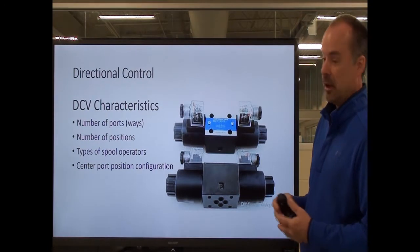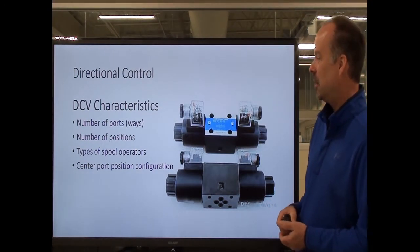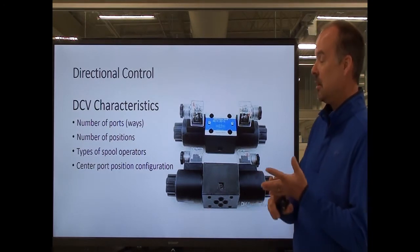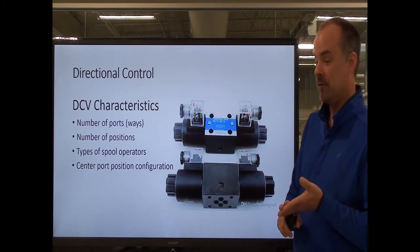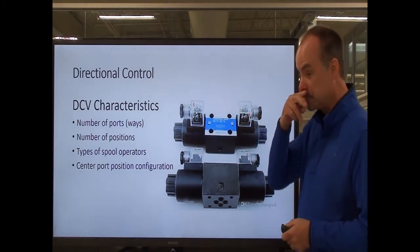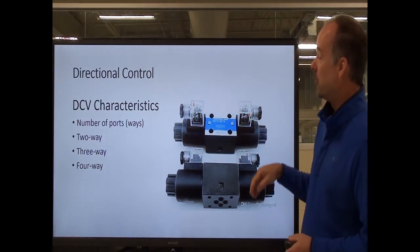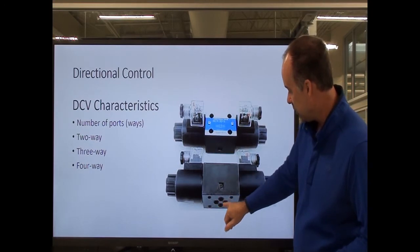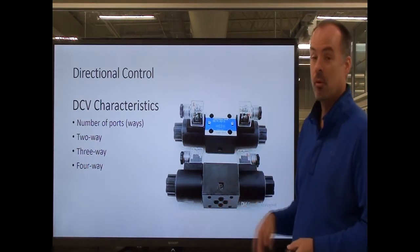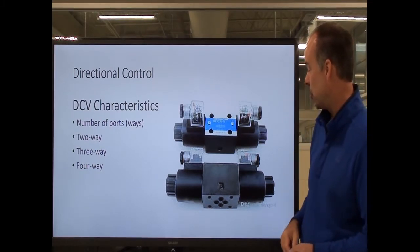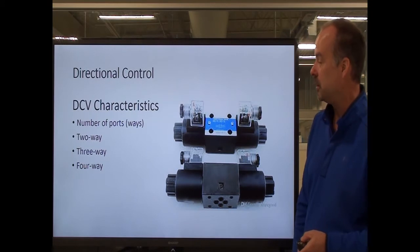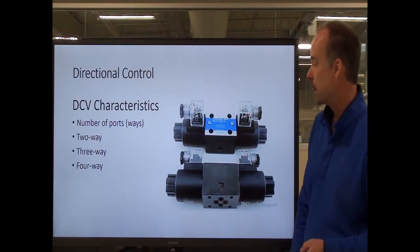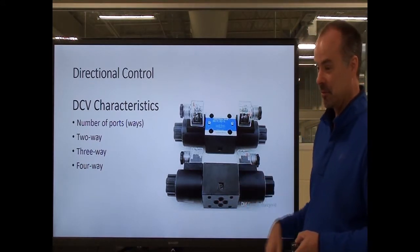Valves are named using a naming convention based on the number of ports or ways, the number of positions, the types of spool operators, and the center port configuration. Looking at the bottom of this valve, I can see four holes, which tells me it's a four-port or four-way valve — meaning there are four places for fluid to flow. Some valves could be two-way with only two ports, or could have three.